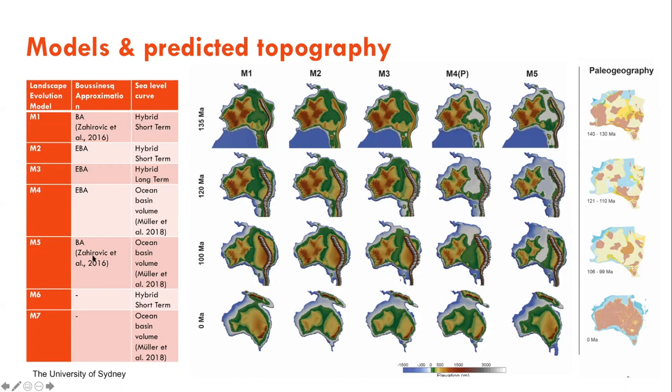We find that when we've tested the ocean basin curve with the Boussinesq models, we almost get too much flooding. It lasts for a lot longer and the basins become a lot deeper.